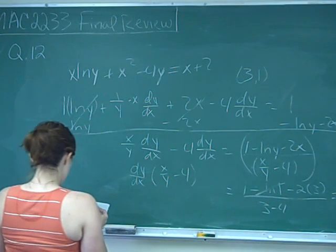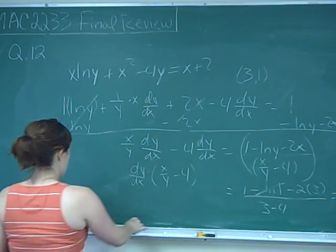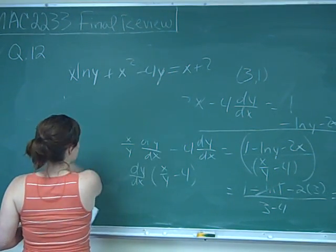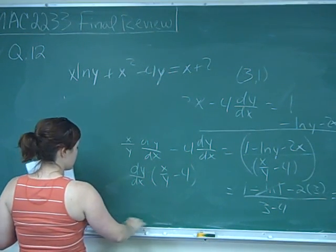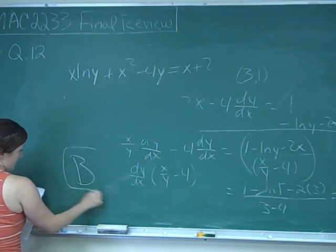And when I go to plug that back in, oh yeah, they just want the slope. So the slope is just 5/4, so that's letter choice B.